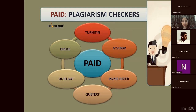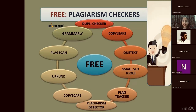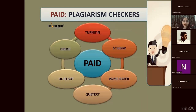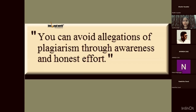When we talk about paid checkers — even Grammarly is paid, and Quetext is also paid — so some plagiarism checkers have both free and paid versions. The best paid plagiarism checkers are Turnitin, Scribbr, PaperRater, Quetext, iThenticate, and BibMe. From all of these, Turnitin and iThenticate are the most popular. You can avoid all allegations of plagiarism through awareness and honest effort.